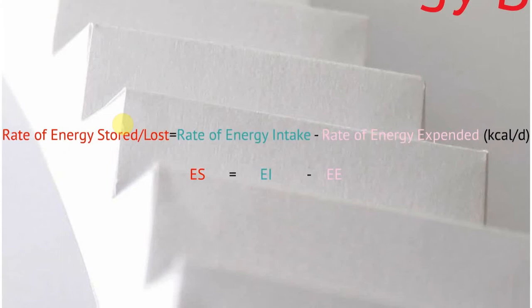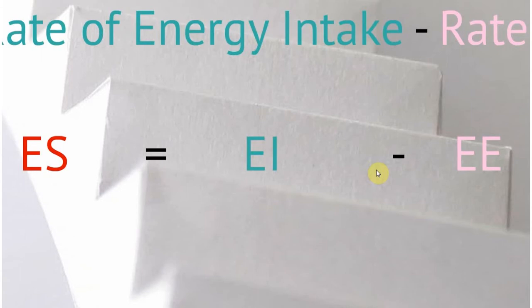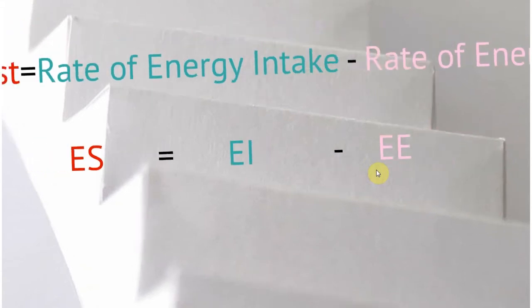What the energy balance equation states is that the rate of energy stored or lost, which we denote as ES, is equal to the rate of energy intake minus the rate of energy expended. I say rate in front of here. I'm always careful to put rate because this is measured in calories per day. Calories per day is a rate, a speed. All of these measurements are speeds. We have a way of modeling speeds using something called differential equations.